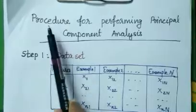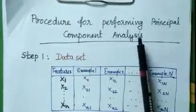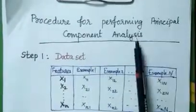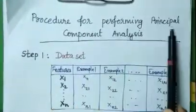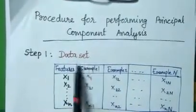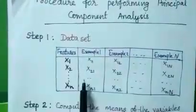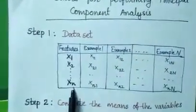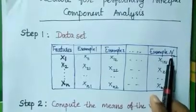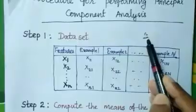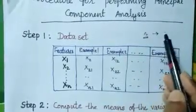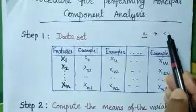Now let us see the procedure for finding the first principal component, second principal component, etc. — that is, the procedure for performing principal component analysis. Step 1 is to represent our data set. Here we have a data set with small n features and capital N examples. Its dimension is small n and we have to reduce this to a lower dimension which is less than n.